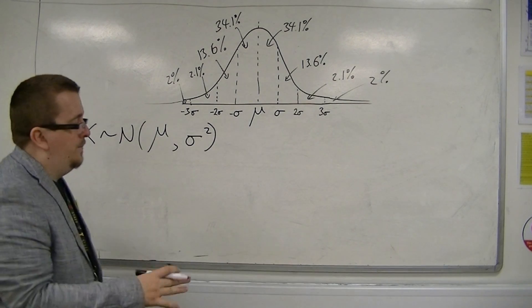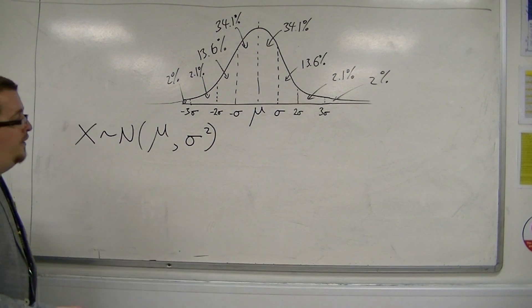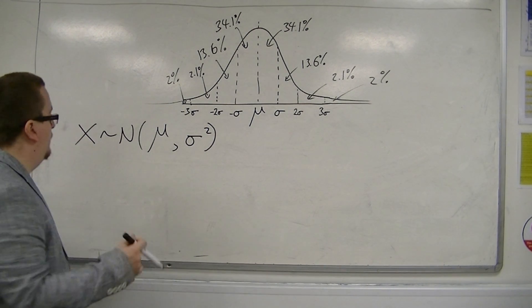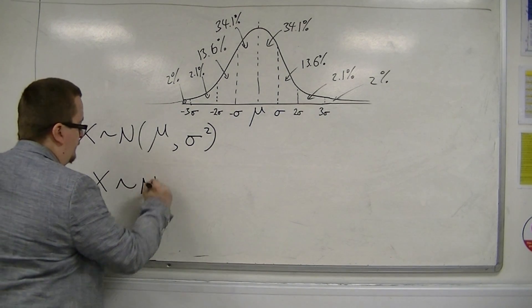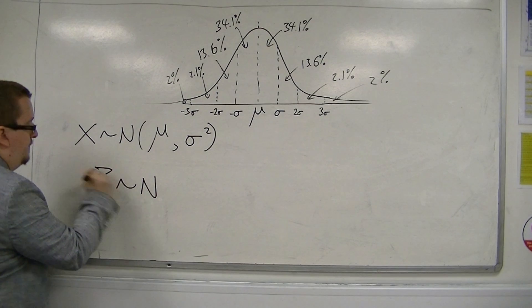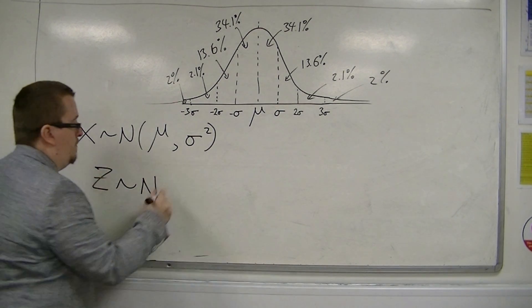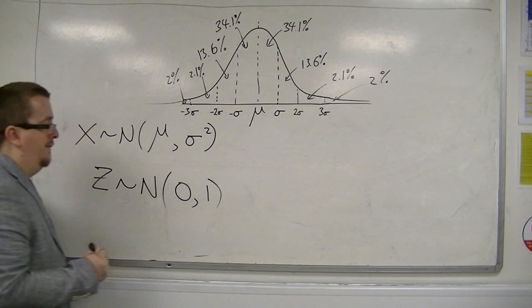Now, the standardized normal that will allow us to solve a great many problems... it's often referred to as z. Z is normally distributed with a mean of 0 and a variance of 1.